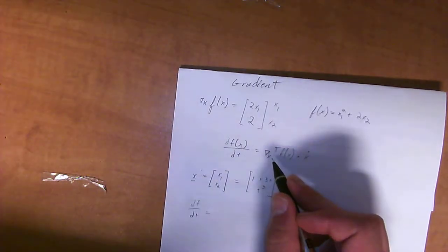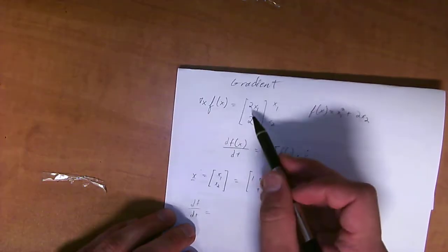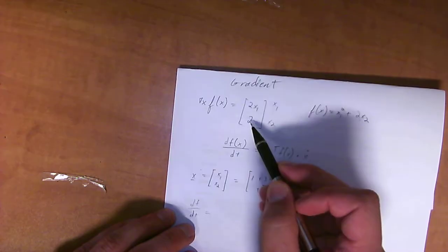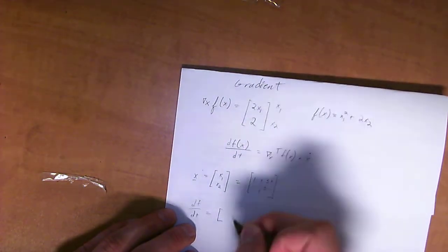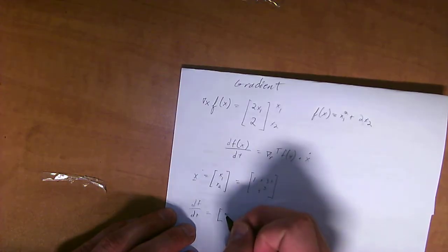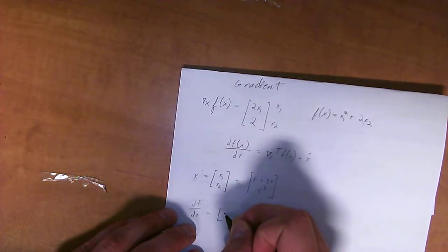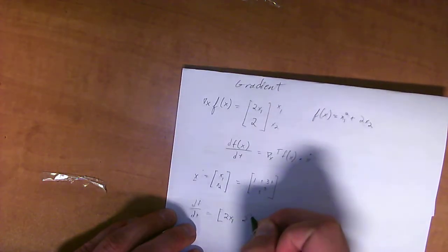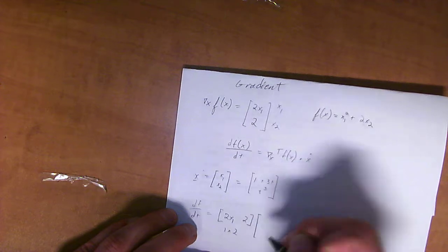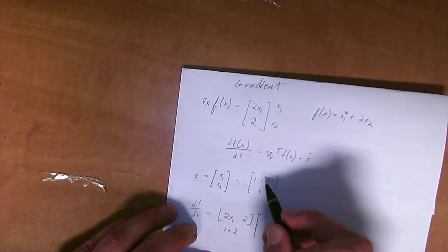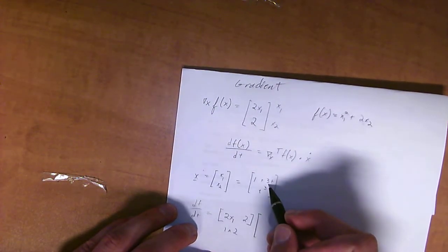Transpose will turn this vector into a 1 by 2 matrix. So, [2x₁, 2], which is a 1 by 2, multiplied by the derivative of this one with respect to t, which is [3, 3t²].